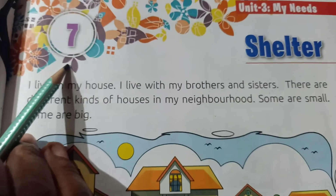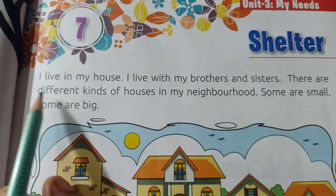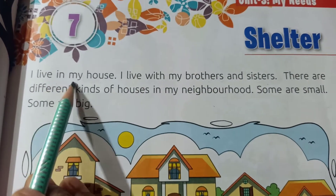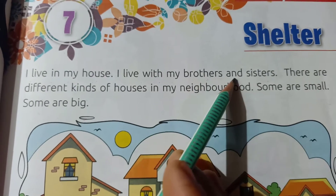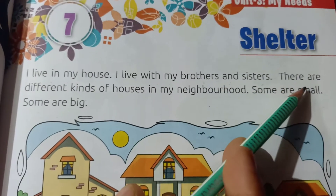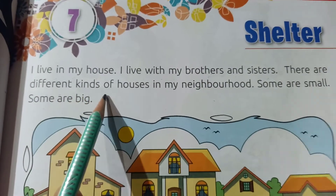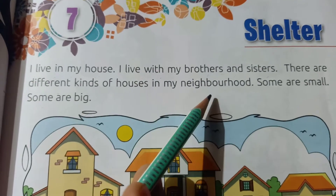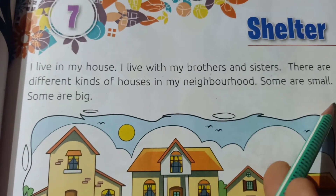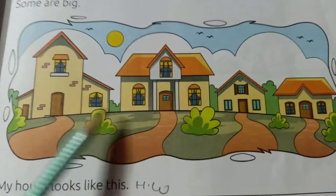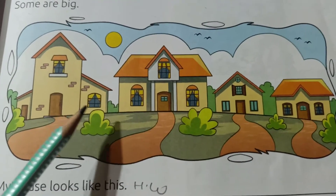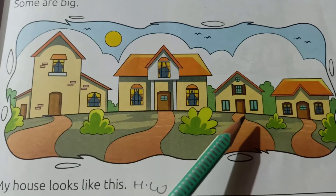Come to your book, page number 43, chapter 7, shelter. I live in my house. I live with my brothers and sisters. There are different kinds of houses in my neighborhood. Some are big, some are small. This is the picture of some houses — some houses are big and some are small.